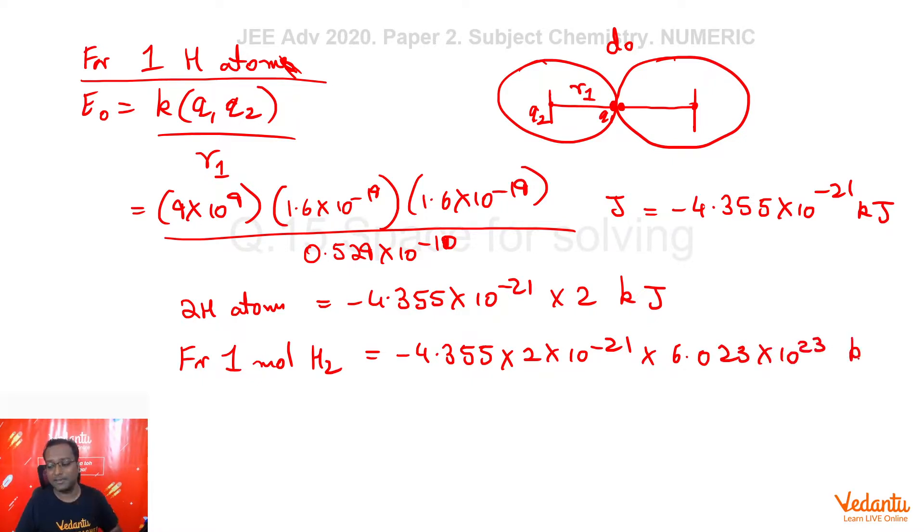Now, finally, the answer will be in kilojoule per mole. This will come out to us minus 5246.49 kilojoule per mole. And because it's a numeric type question, there is always some range allowed for error, but please try to be as accurate as you can.